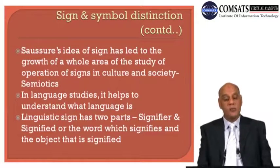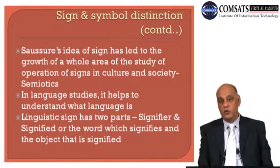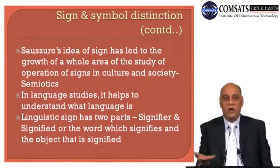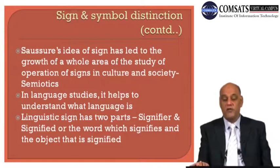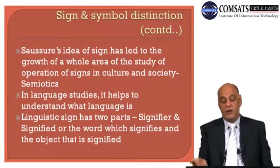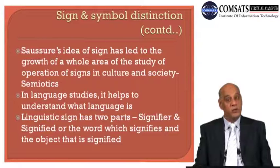Linguistic signs have two parts: signifier and signified. The word which signifies something is the signifier, and the object towards which you are pointing is called the signified. For example, the word 'table' — the word used to signify something is a signifier, while the object towards which you are pointing is the signified.